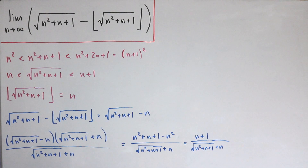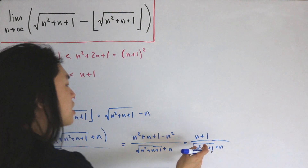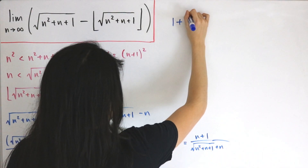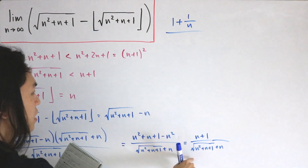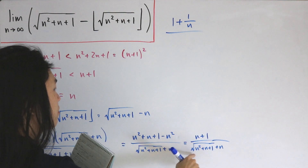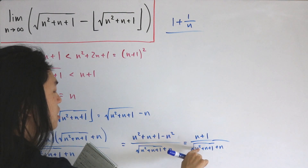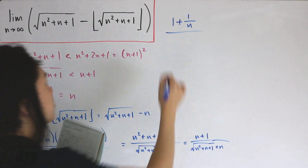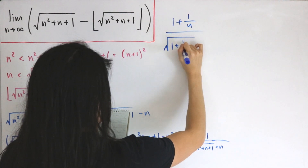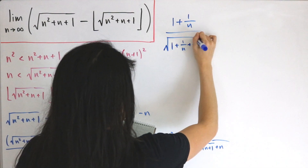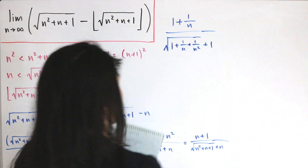Even taking the limit as n approaches infinity isn't immediately easy. So let's divide both the numerator and denominator by n. The numerator becomes 1 plus 1 over n. For the denominator, moving the n inside the radical turns it into n squared, dividing through gives the square root of 1 plus 1 over n plus 1 over n squared, then plus 1.